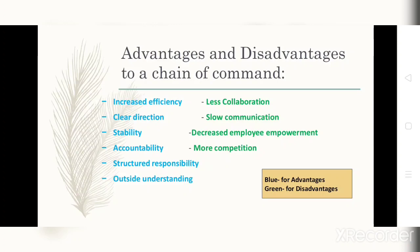Next advantage is clear direction — the information or task flows from the CEO down through the superior levels to the rank and file, so the direction is very clear and it will not lead to confusion. Next is stability — work would be stable. Next is accountability — the superior of the unit or department you are assigned to should have accountability and responsibility. This is followed by structured responsibility and outside understanding.